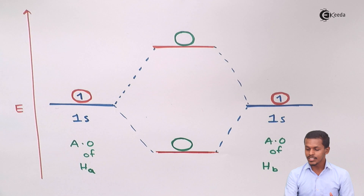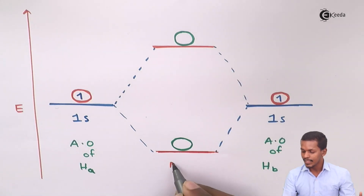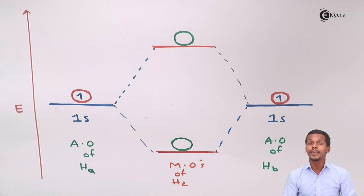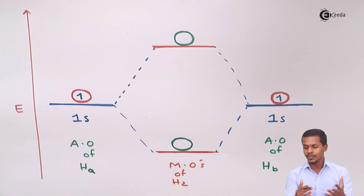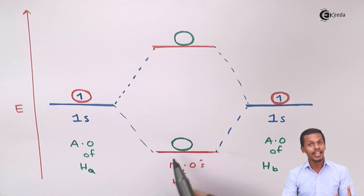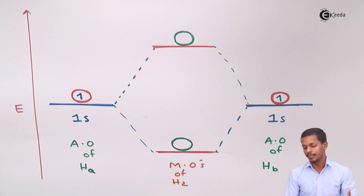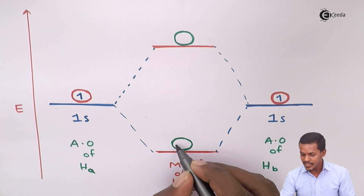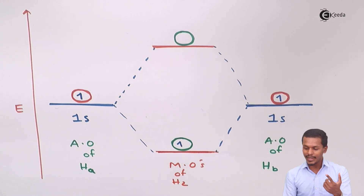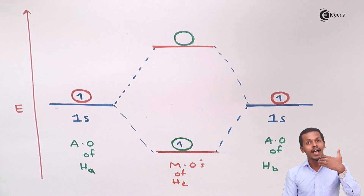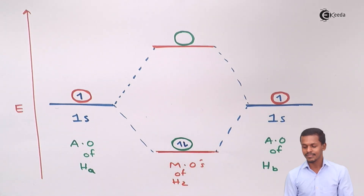Now let us fill the electrons. The filling of electrons follows the Aufbau principle, Pauli exclusion principle, and Hund's rule. The overall molecule consists of two electrons, so I will fill them accordingly. I fill the first electron in the lower energy level. Since there is only one orbital at the lower energy level, I fill the second electron in that same orbital — not moving it to the higher energy level.